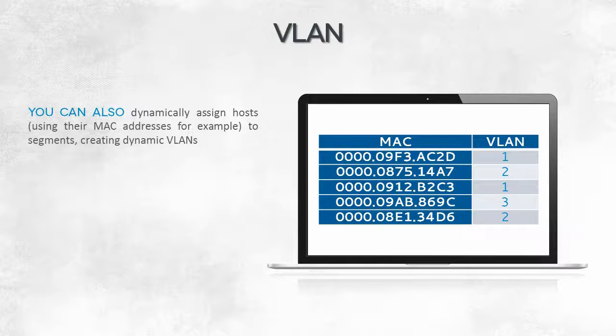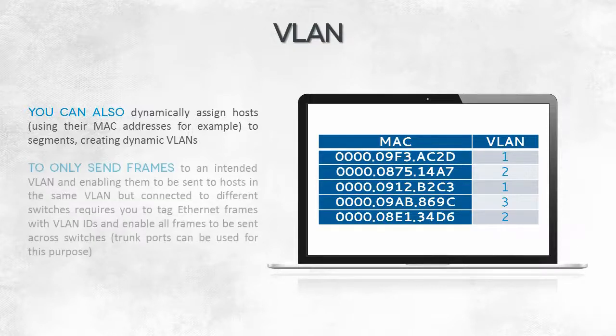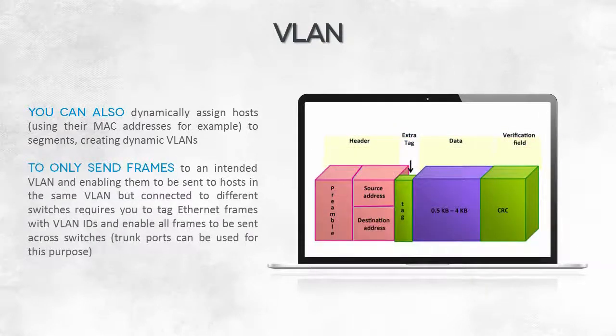To make this possible, some additional information must be attached to the frame. A tag is added which represents the VLAN membership of a given host. To ensure correct communication between switches, it is necessary to make at least one port of each switch a trunk port. This is the transport port through which all frames pass regardless of the tag value, allowing computers connected to one switch to communicate with computers connected to another switch, provided that the tag values are the same.